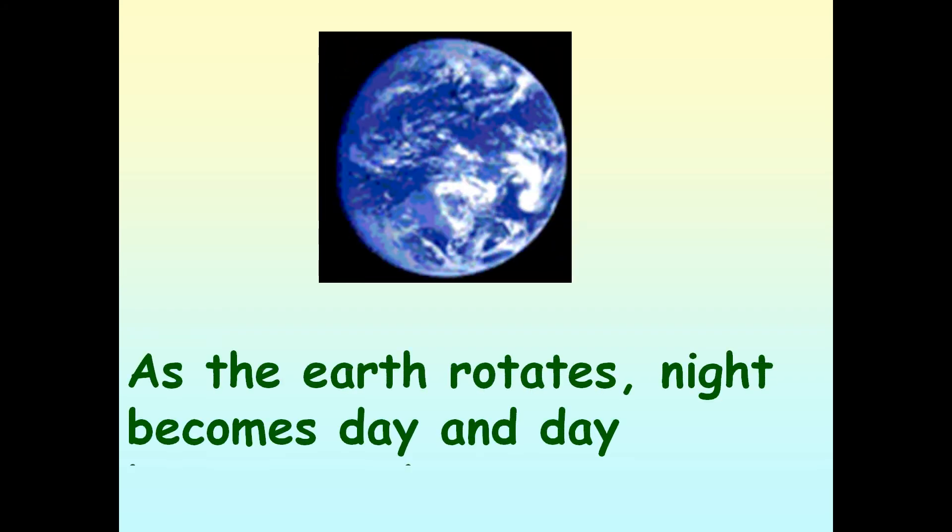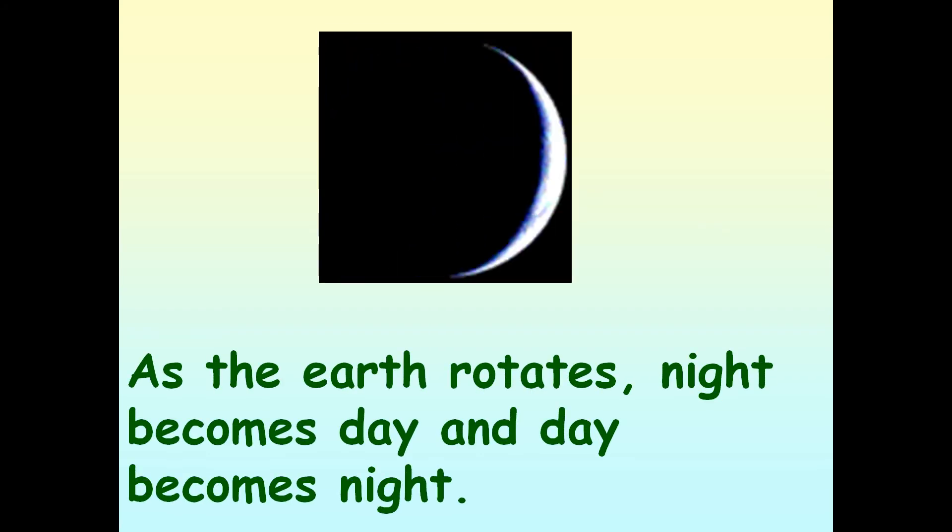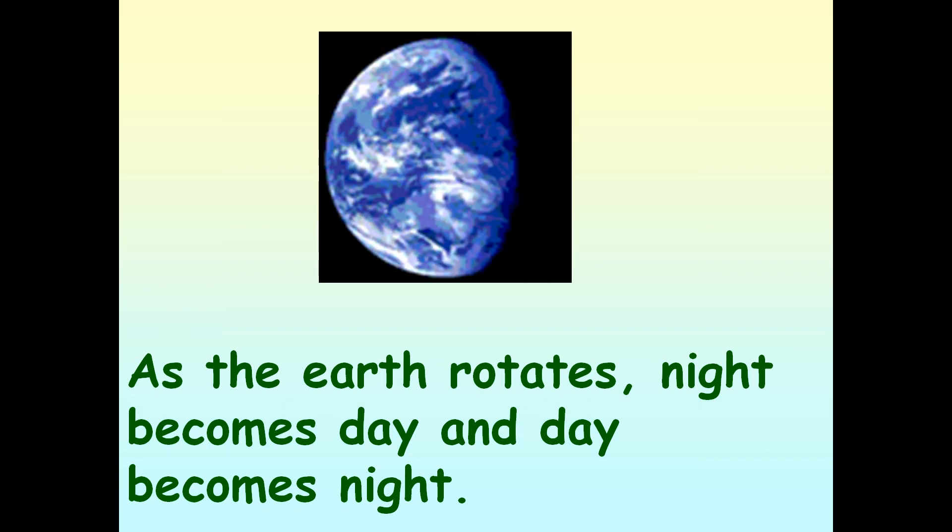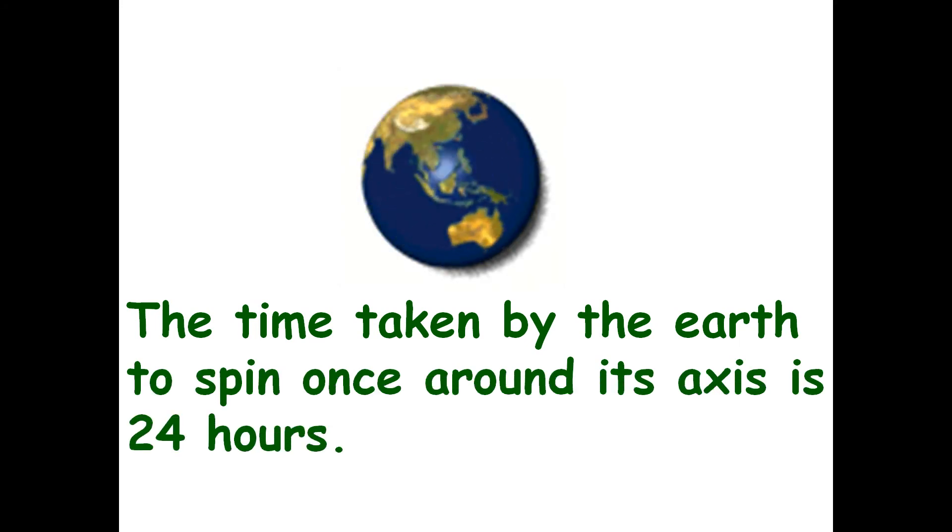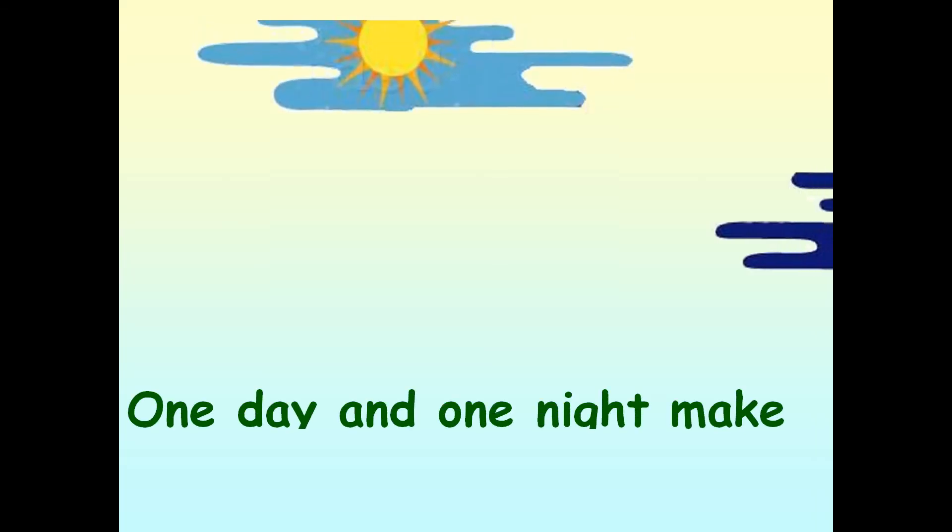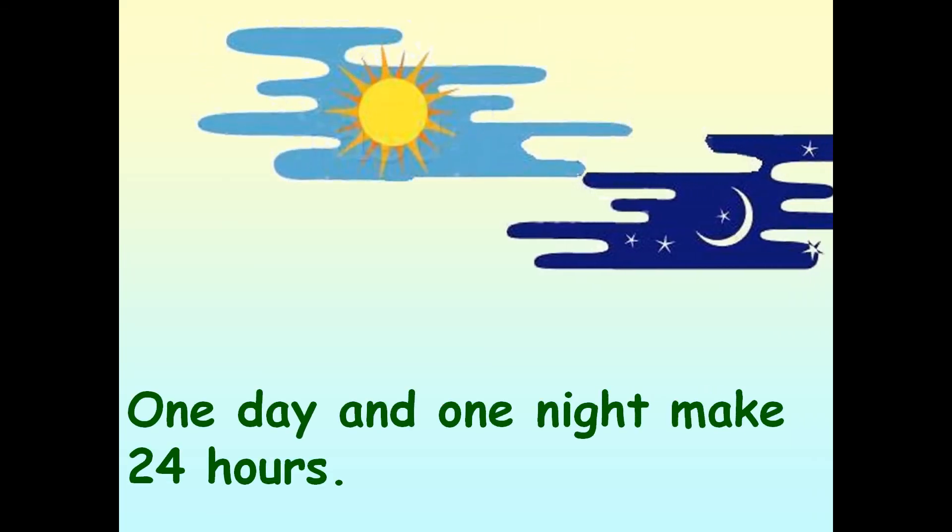As the earth rotates, night becomes day and day becomes night. The time taken by the earth to spin once around its axis is 24 hours. One day and one night make 24 hours.